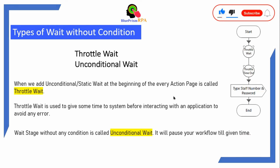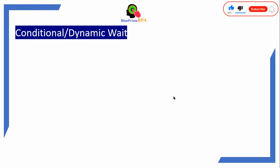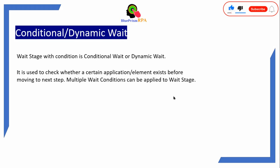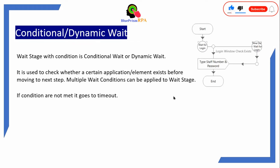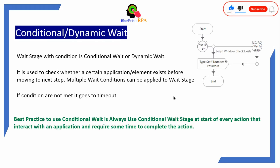A wait stage without any condition is called unconditional wait, and it will pause your workflow until the given time. For example, if you set 5 minutes, your bot will always wait for 5 minutes in that scenario. A wait stage with a condition is called conditional wait, or dynamic wait. It is used to check whether a certain application or element exists before moving to the next step. In the wait condition, we can apply multiple conditions. If conditions are not met, it goes to the timeout. The best practice is to always use conditional wait at the start of every action that interacts with an application and requires some time to complete.